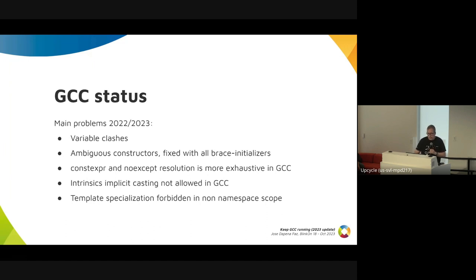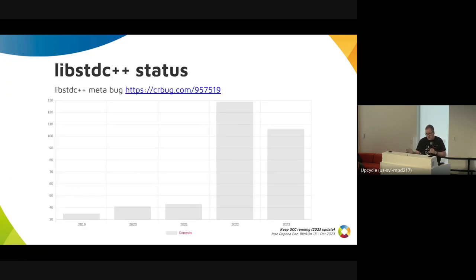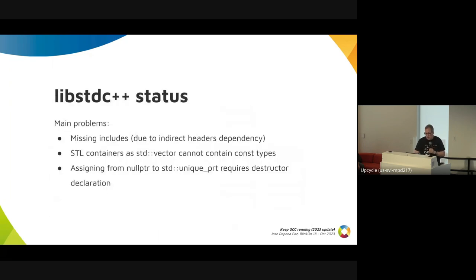Template specialization is forbidden in certain cases. And libstdc++ is still a lot of work. The main problem is missing includes, because the regular headers in libc++ include more stuff. So usually you need to add more includes in libstdc++. STL containers do not allow const as the contained type. Unique pointers assigned from a new pointer require a destructor, so you actually need to include the headers.